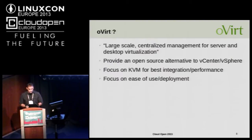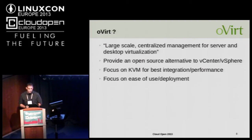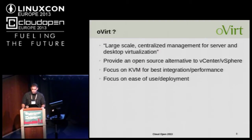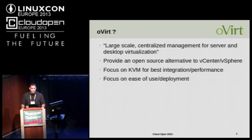What is oVirt? By definition, it's large-scale centralized management for server and desktop virtualization. It is an open source platform for data center virtualization, providing a good alternative for vSphere and vCenter. oVirt has a focus on KVM — it is tailored for it and takes advantage of KVM features — and it also focuses on ease of use and deployment.